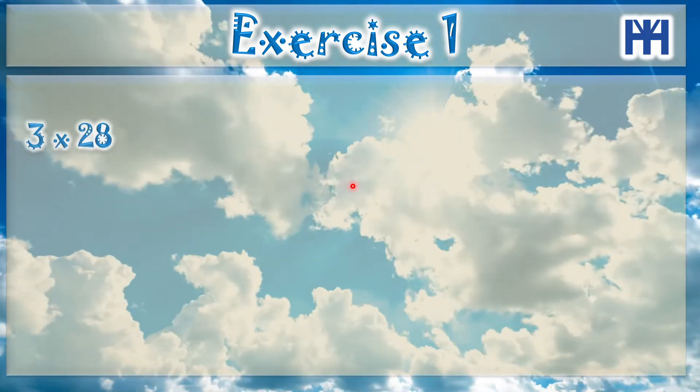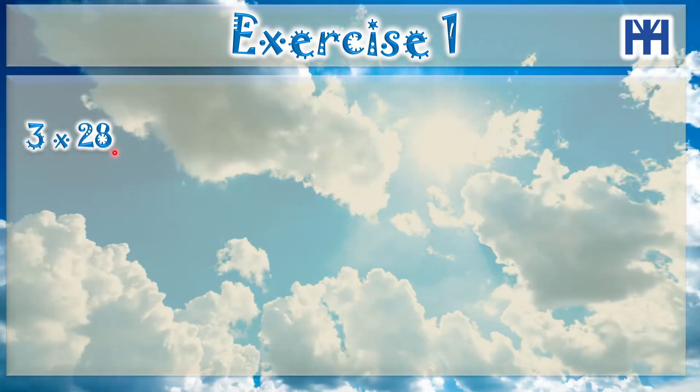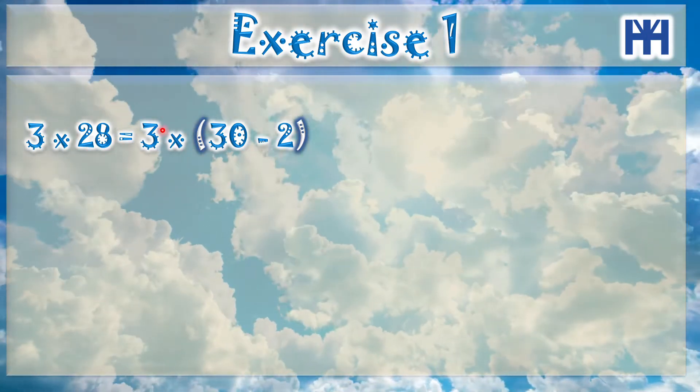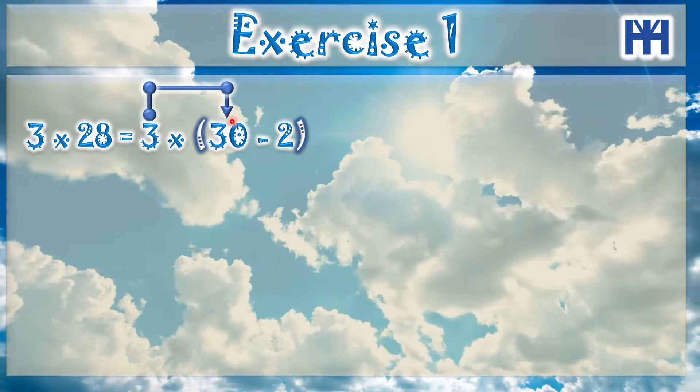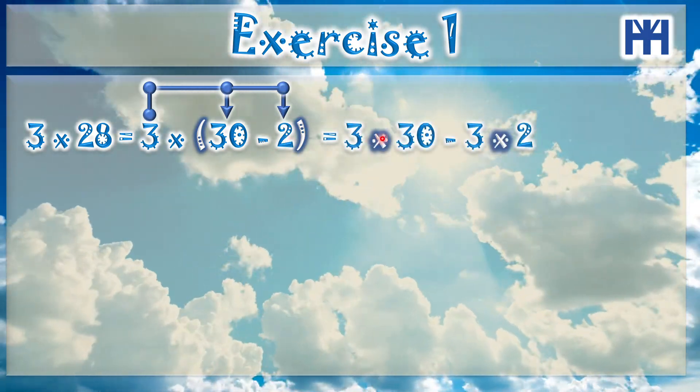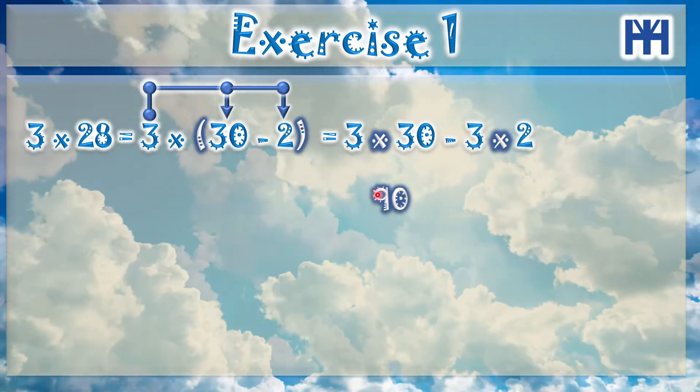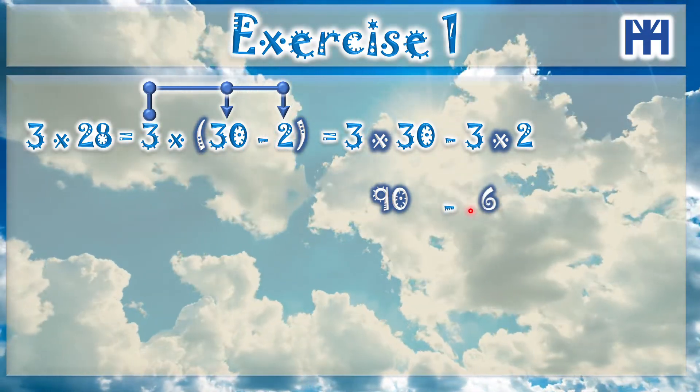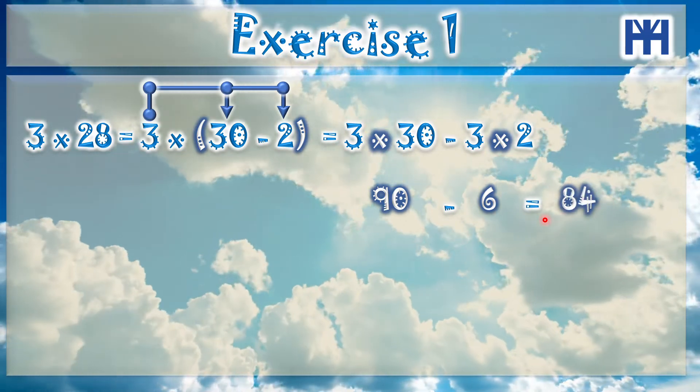Exercise 1. 3 times 28. We can say that the 28 is 30 minus 2. So 3 times 30 minus 3 times 2. So 3 times 30 is 90 minus 3 times 2 is 6. So 90 minus 6 is 84.